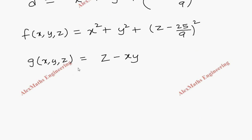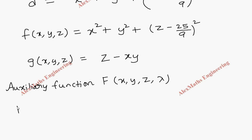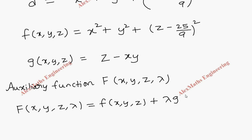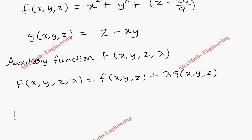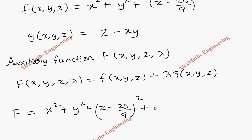Now we write the auxiliary function using these two. The auxiliary function is F(x, y, z, λ) = f(x, y, z) + λ·g(x, y, z). Substituting, capital F = x² + y² + (z−25/9)² + λ(z − xy).